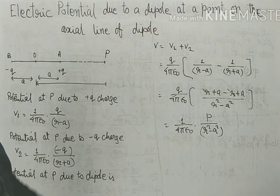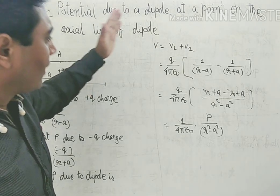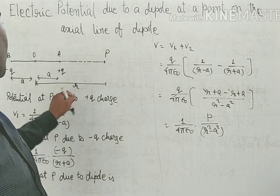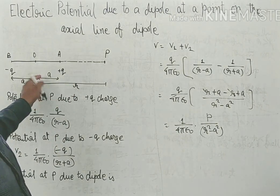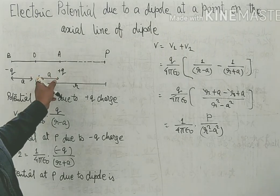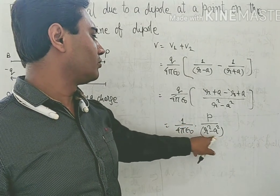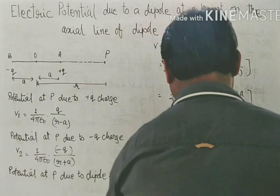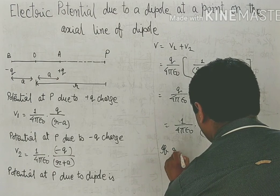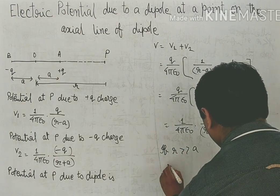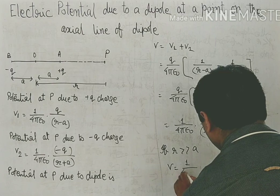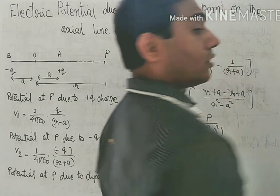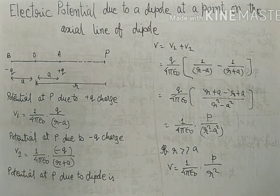If the test point is at a far-off position such that r >> a, then a² becomes negligible compared to r². Under that condition, V = (1/4πε₀) × P/r². This is the outcome for the axial potential of a short dipole at large distances.